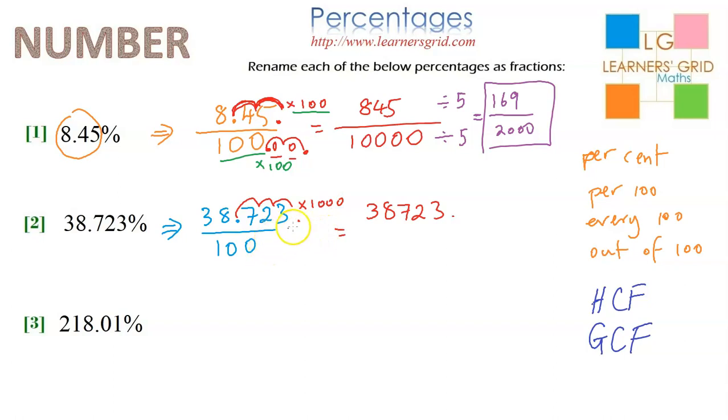Now whatever I've done to the top, I've got to do to the bottom. I'm going to multiply by 1,000. The shortcut way is I'm just going to move the decimal point, which is after the zero here, and go 1, 2, 3. So 100 with three extra zeros: 100,000.